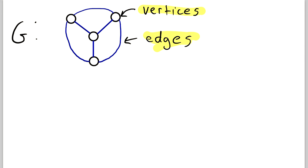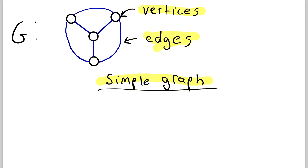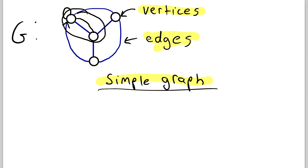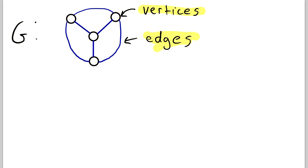What we're talking about today is called a simple graph. This is called a simple graph because loops aren't allowed — an edge from one vertex to itself is not allowed. Multiple edges joining the same pair of vertices are not allowed. And directed edges — giving direction to a blue edge — are not allowed either. Edges in simple graphs don't have direction. Simple graphs are usually just called graphs.